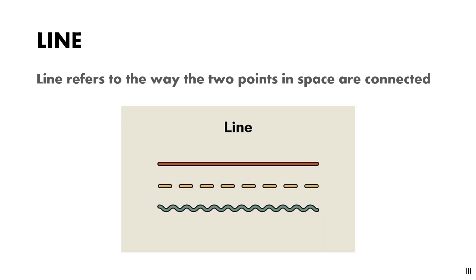First element of design is line. Line refers to the way two points in space are connected. Lines can be real lines or implied lines. Real lines are which you can easily observe that they really connect two points like all these. But implied lines are not real lines, they create a sense of line. Like if some objects are kept in a row, they will create a sense of line.